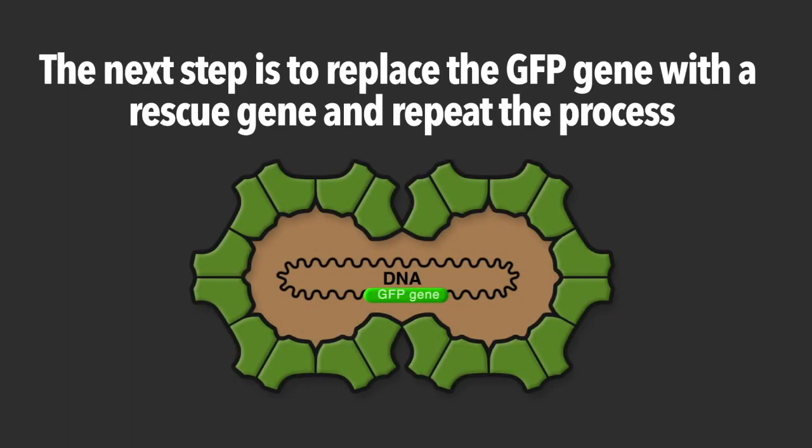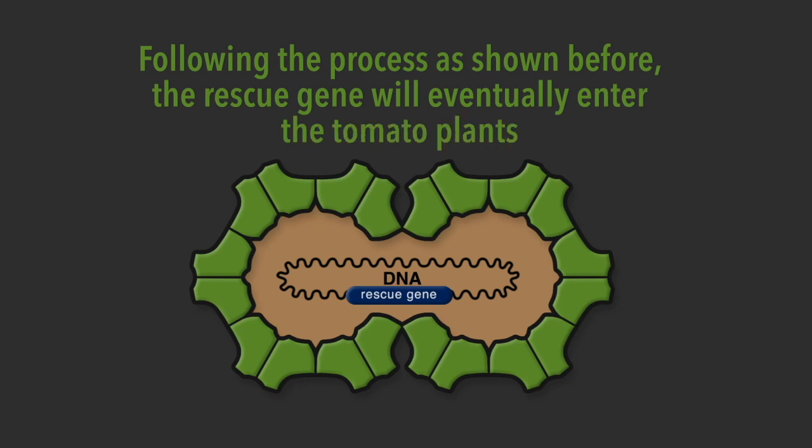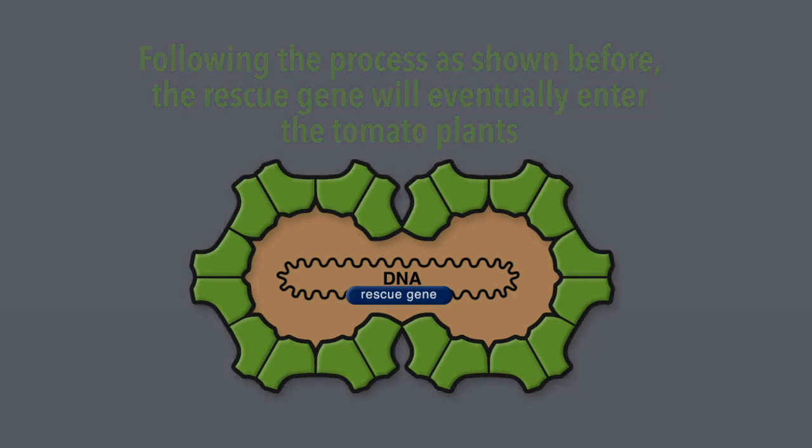The next step in this process is to replace that green fluorescent protein with a protective gene. That plant protective gene will be used to assist the plants in this particular case in response to drought.